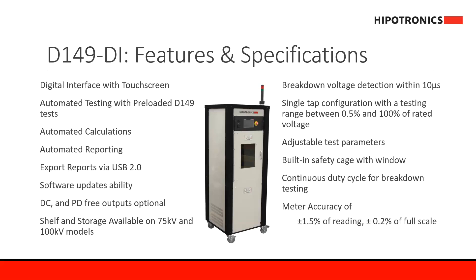Although the system comes with pre-loaded D149 tests, the operator can also adjust any of the test parameters. Both versions of the system — the smaller version and the larger 75kV version — come with a built-in safety cage window, and it's designed with a continuous duty cycle for breakdown testing. This unit also has one of the highest accuracies in the market, at 1.5% of reading plus/minus 0.2% of full scale.